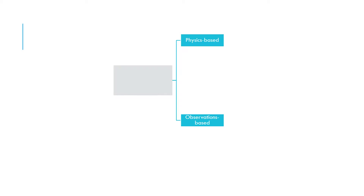We can choose to group the modeling approaches into physics-based and observation-based or data-driven models. Physics-based models follow from fundamental physical laws such as conservation of mass and energy. They provide insight into the physical process in a manner that is more precise and more trustable because we start from universal conservation laws.